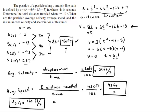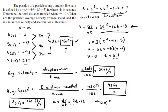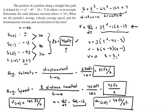The acceleration is given by the derivative of the velocity. Taking the derivative of the velocity equation gives the acceleration equation: a = 6t - 12. Plugging in t = 10 gives an acceleration of 48 feet per second squared.